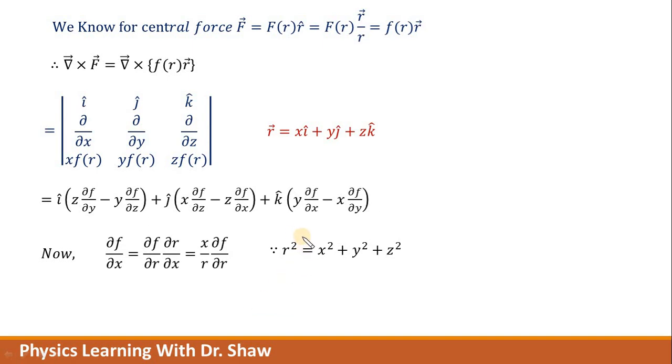If you take a partial derivative on both sides with respect to x, on the left-hand side you will get 2r del r/del x, and on the right-hand side you will get 2x. So the 2s will cancel and del r/del x becomes x/r.